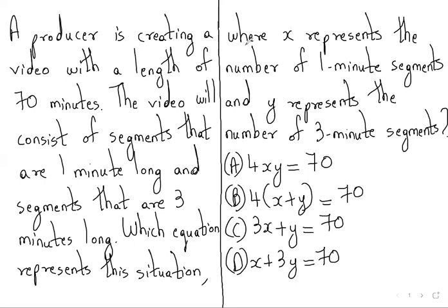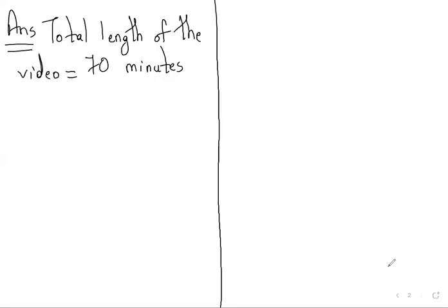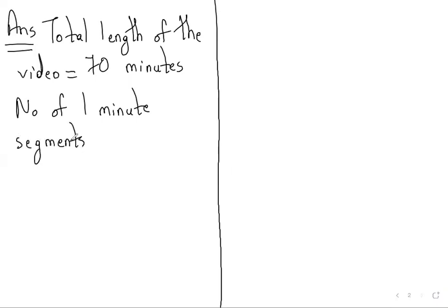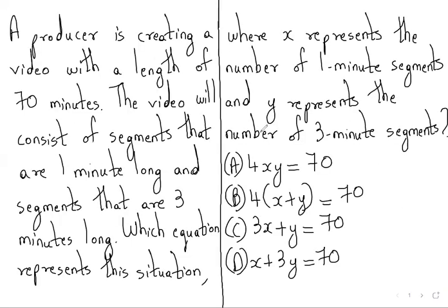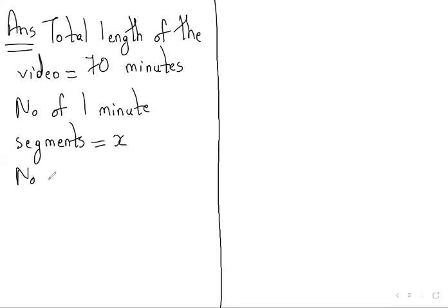The equation represents the situation where x represents the number of one-minute segments — so the number of one-minute segments is equal to x. And y represents the number of three-minute segments, so we will write: number of three-minute segments is equal to y.